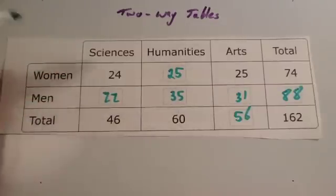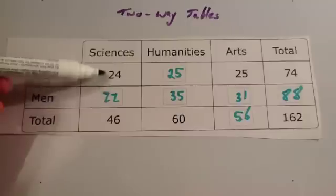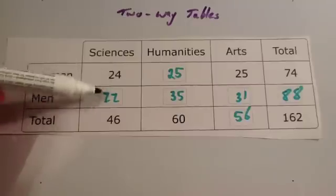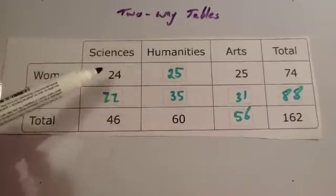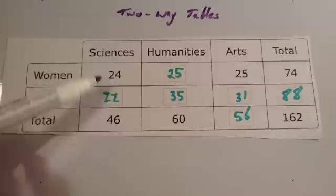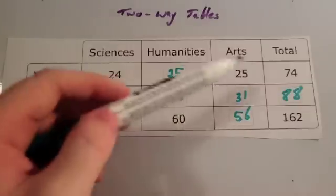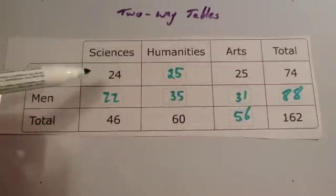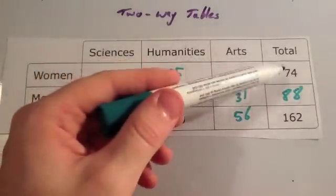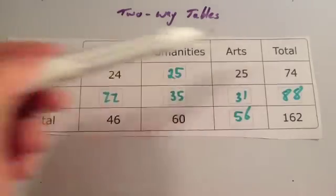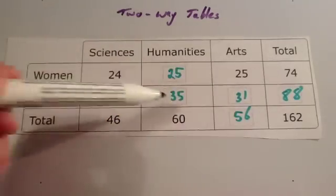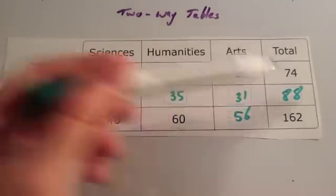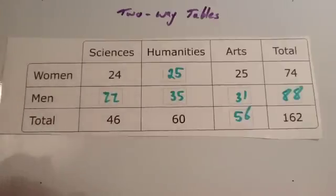The key thing is that the two numbers for men and women will add together to give you the total. You can use that information to work out some of the missing numbers. Also, each of the rows will add together to give you the total in that column — so that plus that plus that would give you 74, and that plus that plus that would give you 88. That might help you work out some of the missing numbers as well.